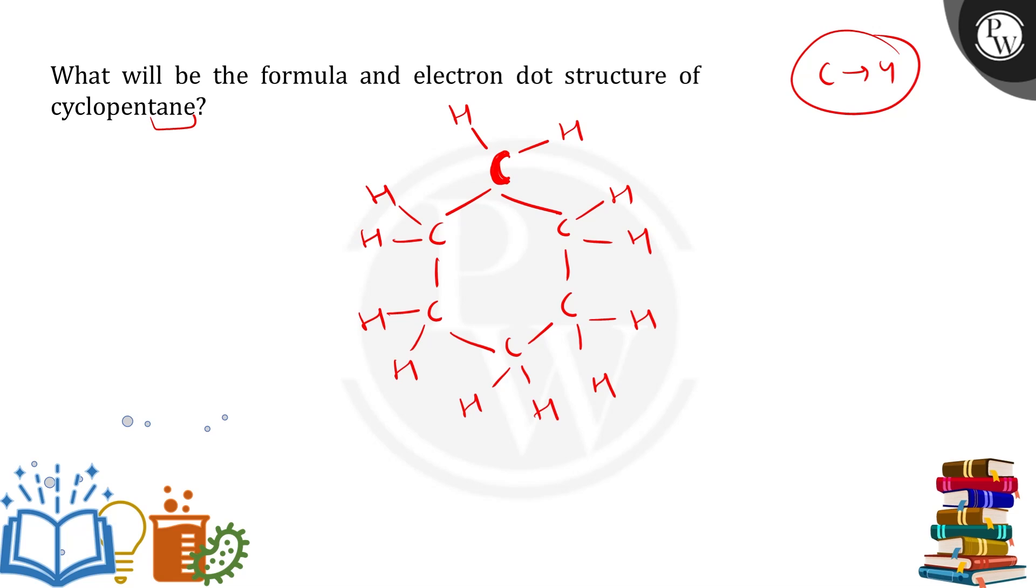We have to show the electrons. 1, 2, 3, 4. Hydrogen has 1 electron. We have completed hydrogen's duplet.